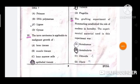Question number 35: The grafting experiment of Hammerling established the role of nucleus in heredity. The experimental material used in this experiment was option B, Acetabularia.